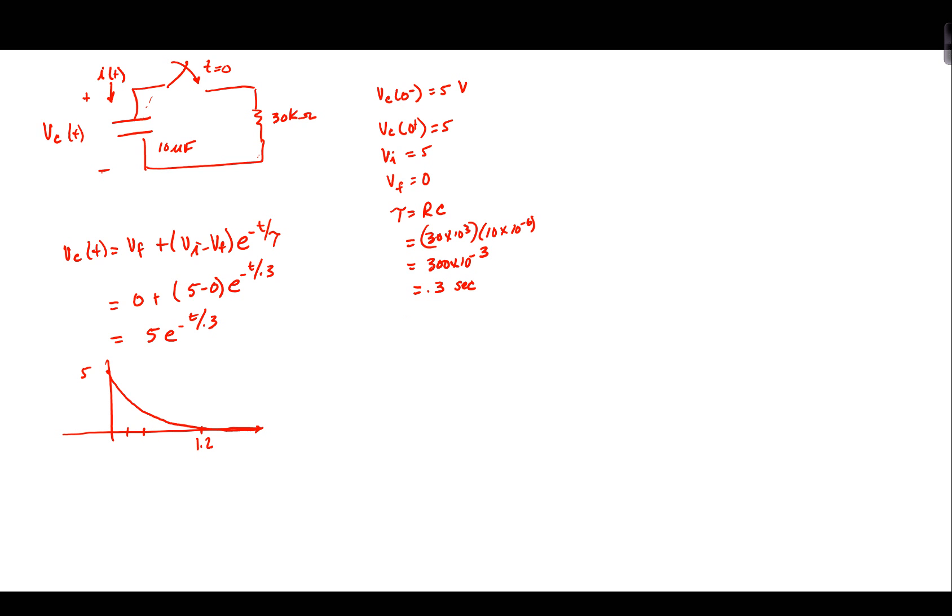It will be within about 98 or 99 percent of the final value. And we can mark off the other taus. This is 1 tau at 0.3, 0.6, 0.9. Not terribly well delineated, but you get the idea. So, the voltage on the capacitor starts at 5 volts, it decays exponentially towards zero, and that's the graph of the voltage across the capacitor as a function of time.